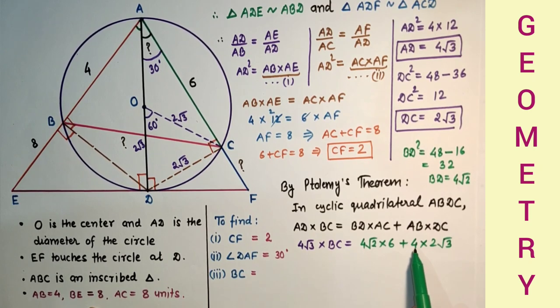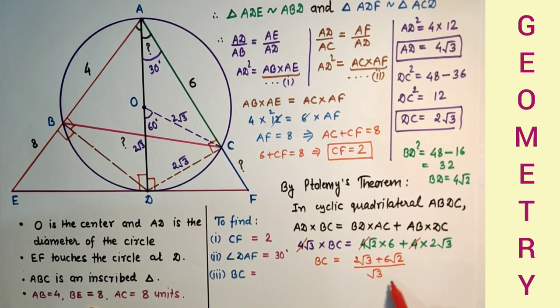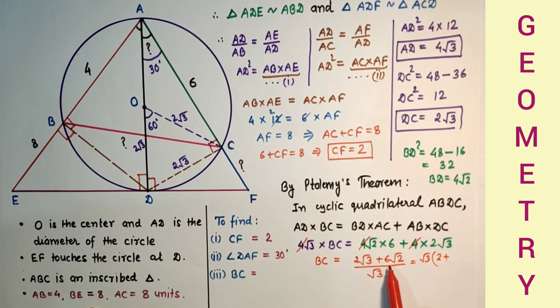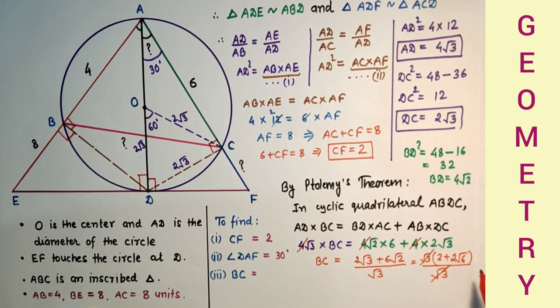So we can cancel out by 4 throughout. So BC equals (6√2 + 2√3)/√3. If we multiply √3 in numerator and denominator, or if we take √3 common in numerator, it will be √3×(2 + 2√6)/√3. So √3 and √3 will get cancelled, so BC equals 2 plus 2√6. We can take 2 common, so it will be 2(1 + √6).